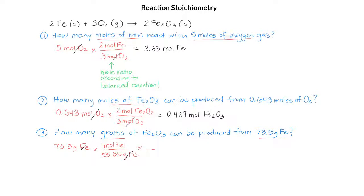Now we're ready to use our mole ratio from the balanced equation. Moles of iron have to be on the bottom. In our reaction, 2 moles of iron produce 2 moles of Fe₂O₃. We cancel out the moles of iron and are left with moles of Fe₂O₃.